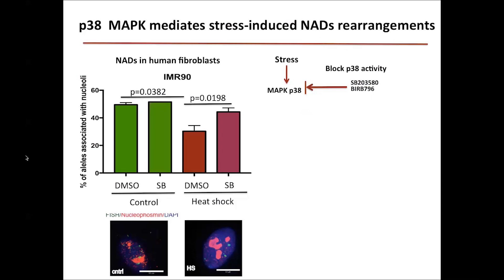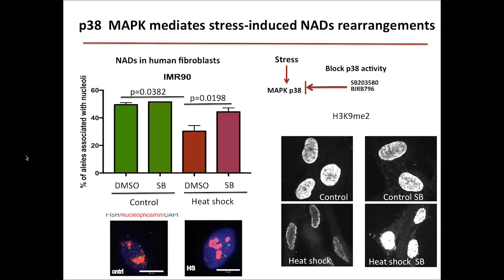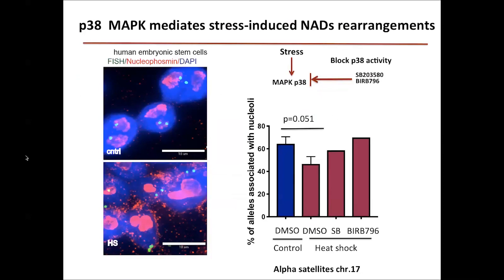In IMR90 cells, FISH of alpha-satellite sequences showed a significant drop in association with nucleoli after heat shock. However, in the presence of a P38 inhibitor, this dissociation was largely rescued — suggesting P38 activity is important for heat-shock-induced NAD dissociation. We also observed that heat shock clears H3K9me2 from the nuclear interior in IMR90s, and this clearance can be prevented by the P38 inhibitor. In H1 cells, we again observed a significant drop in alpha-satellite association with nucleoli after heat shock, rescued by P38 inhibitor treatment.